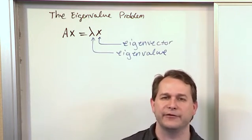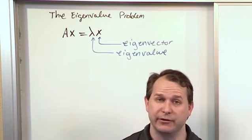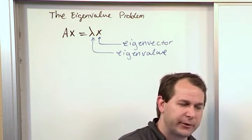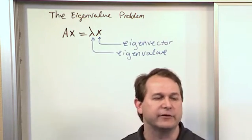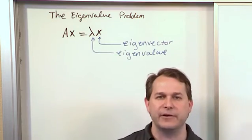That's why I say eigenvectors and values go together like peanut butter and jelly. For a given eigenvalue, which is just a number, you get a corresponding set of eigenvectors. For the next eigenvalue that you have, you have another corresponding set of eigenvectors.